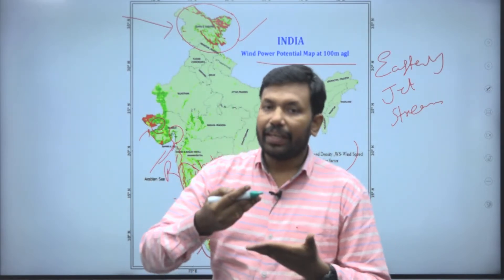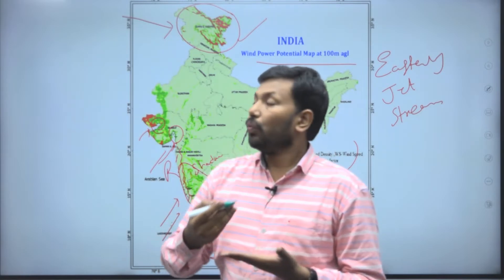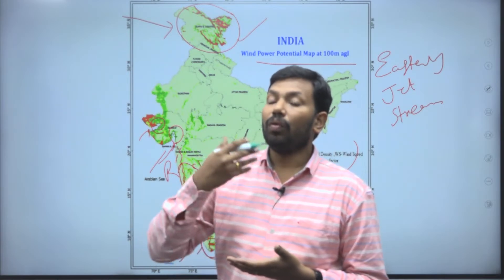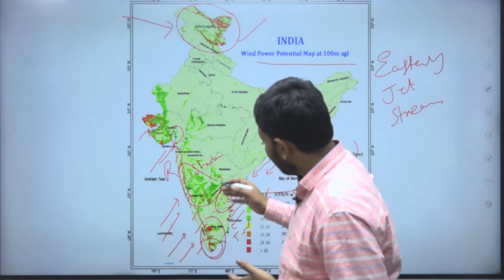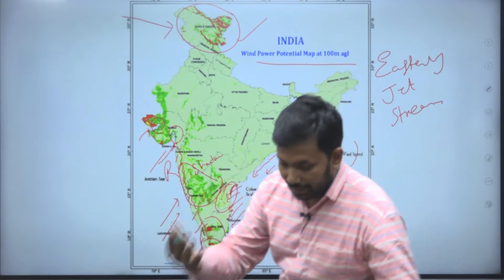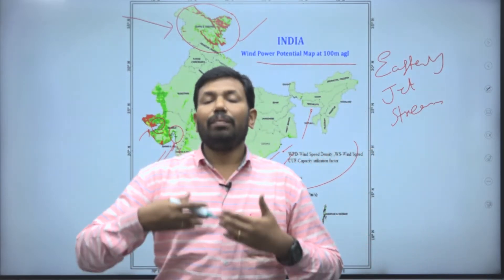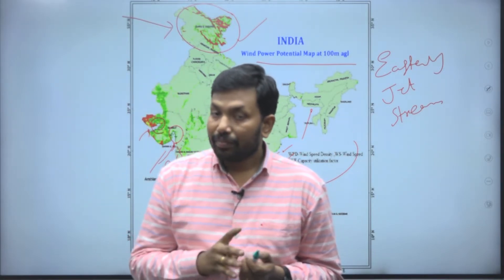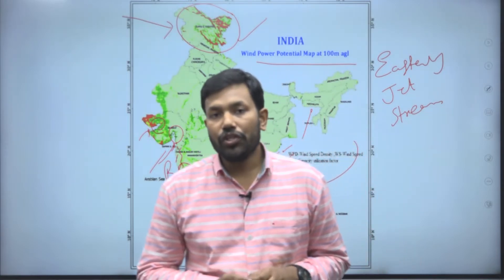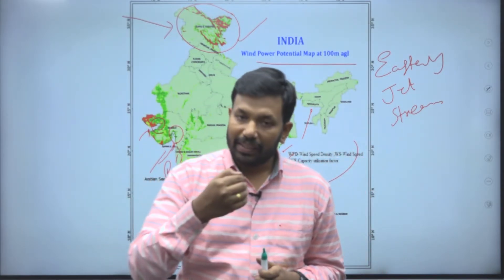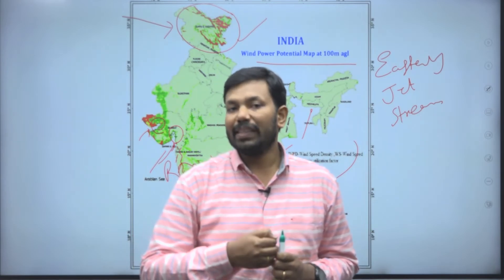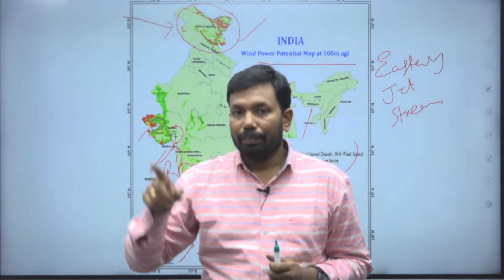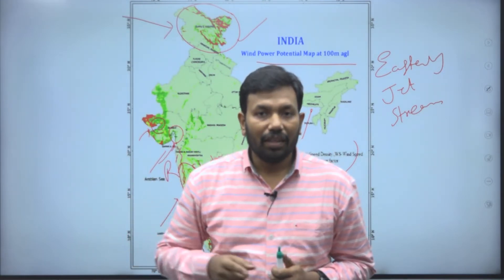You need to write about these potential areas, list the states, and draw the diagram. Also address the limiting factors. For example, during the burst of monsoon, wind speeds become very high and can damage wind turbines. Additionally, the Western Ghats being an ecologically sensitive region means migratory birds — coming from the northern or southern hemisphere — can be impacted or involved in accidents with the rapidly revolving wind turbines.